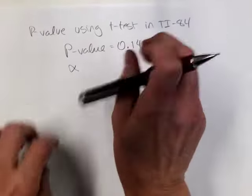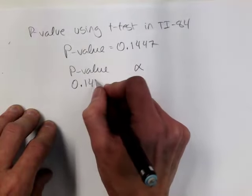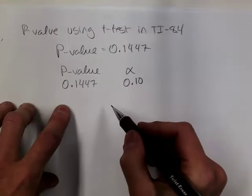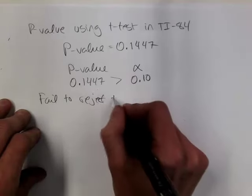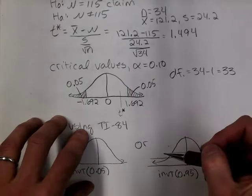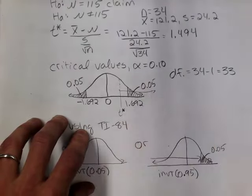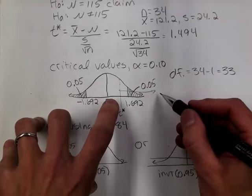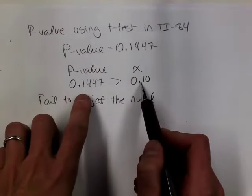Let's compare the p-value to alpha. My p-value is 0.1447 and alpha was 0.10. Is this p-value less than or equal to alpha? No — it's greater than alpha, so we fail to reject the null. Looking back at our critical value and test statistic, that makes sense: the p-value area from the test statistic, doubled for a two-tailed test, is clearly greater than alpha.